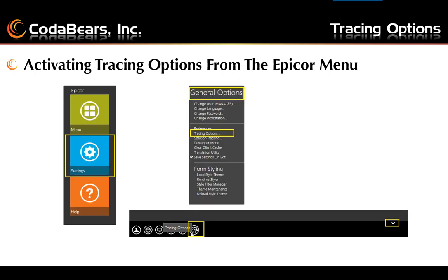You can activate the tracing options using the EPICOR menu by clicking the settings tile. The settings tile is shown here. Once you get to the settings tile, you'll be in the general operations area, and you can select the tracing options item to open the tracing options form.